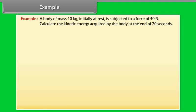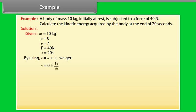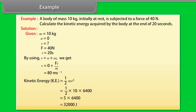Example. Let's take an example of kinetic energy. A body of mass 10 kg initially at rest is subjected to a force of 40 N. Calculate the kinetic energy acquired by the body at the end of 20 seconds. Let's see the solution. Given values are m = 10 kg, u = 0, F = 40 N, t = 20 seconds. By using v = u + at, we get v = 80 m per second. Kinetic energy = ½mv². On calculating, we get kinetic energy = 32,000 joules.